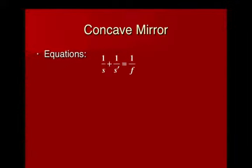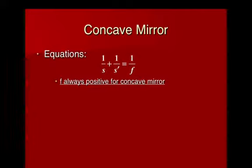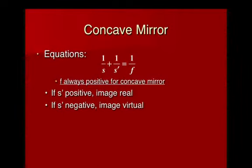Now, there are two basic optic equations that cover all of mirrors and all of lenses. The first one, often called the optic equation, says 1 over s — my object distance — plus 1 over s prime — my image distance — equals 1 over my focal length f. Now, f is always going to be a positive value for a concave mirror, and also always positive for a converging lens. In the math, if s prime calculates out to be a positive value, it's a real image. If s prime calculates out to be a negative value, it's a virtual image.